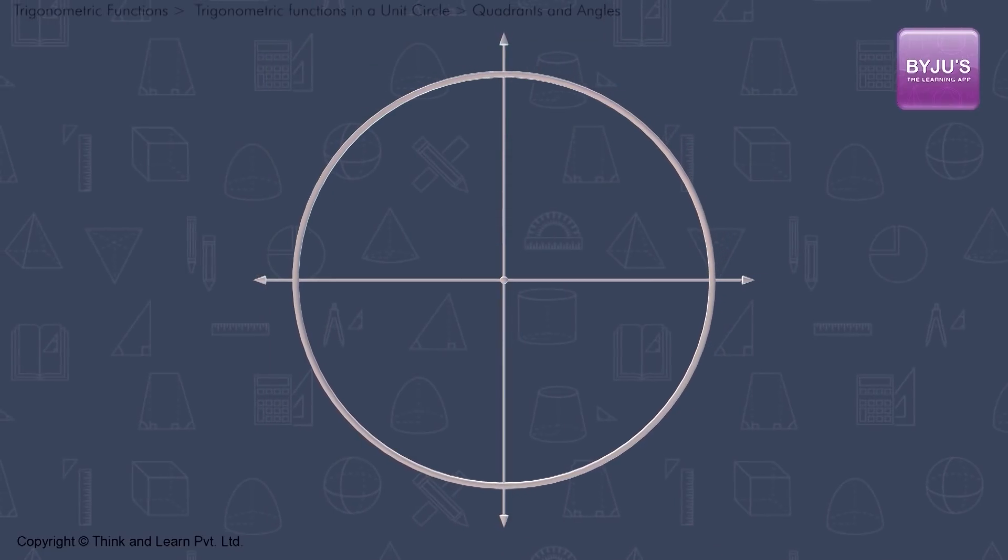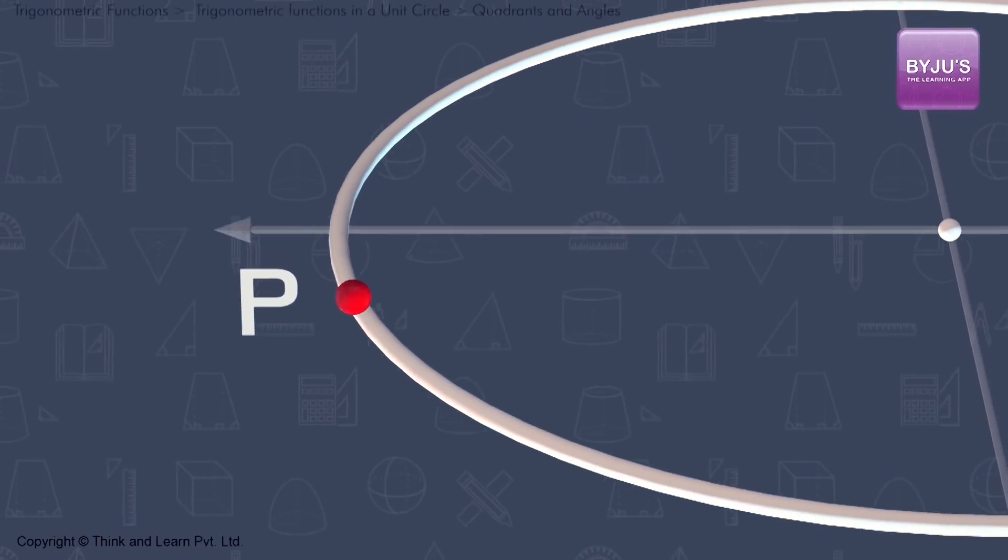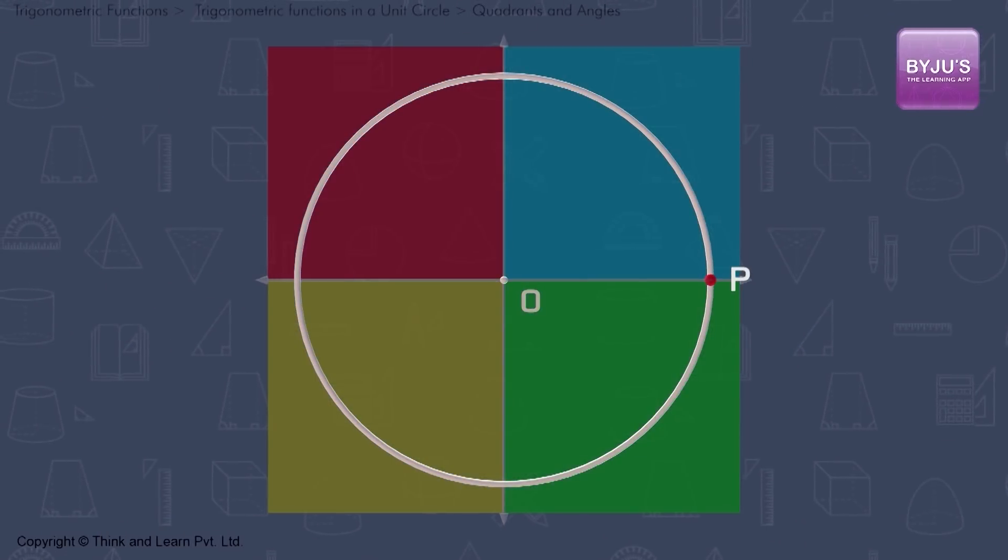Now imagine a point P on the circle which moves around the circle in an anti-clockwise direction. The xy plane is divided into 4 quadrants.